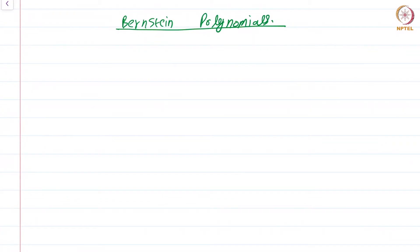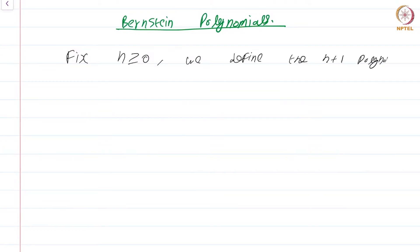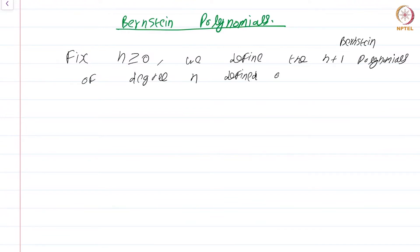In this module, let us talk about the basic properties of Bernstein polynomials. We begin with what these Bernstein polynomials are. Fix n greater than or equal to 0. We define the n plus 1 Bernstein polynomials of degree n, defined on 0 to 1, by b_{k,n}(x).